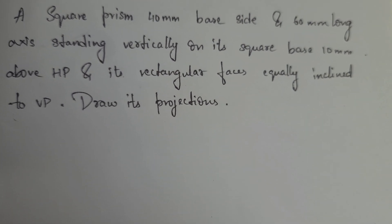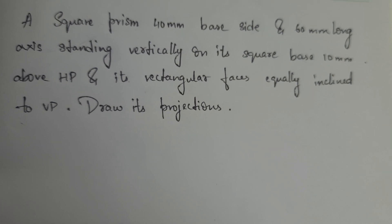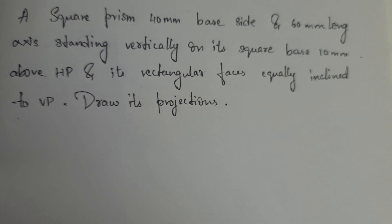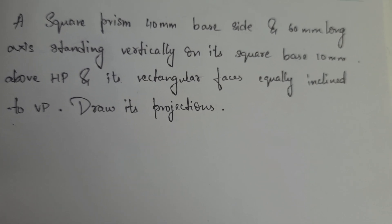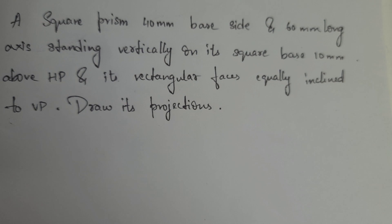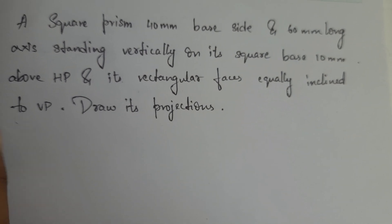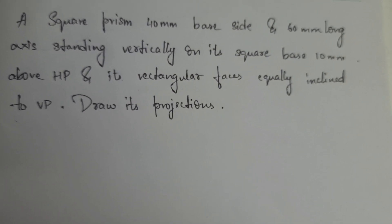What we have to do is, a square prism is 40 mm base. Basically, the square has equal sides, so every edge of the square is 40 mm here. The prism axis is 60 mm long.